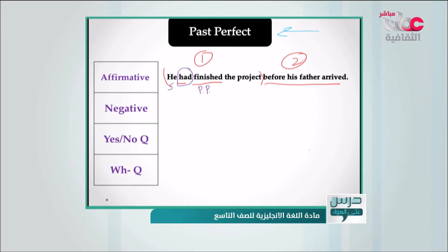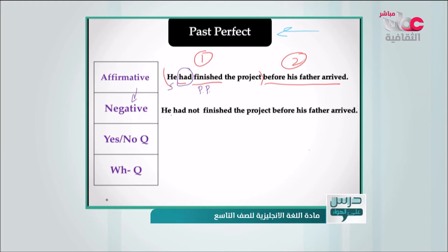To change an affirmative sentence into a negative one, we just add the word 'not.' So: 'He had not finished the project before his father arrived.' We have 'had not' followed by the past participle of the verb.